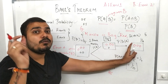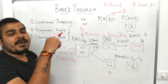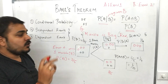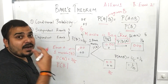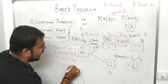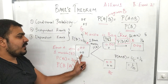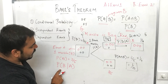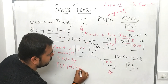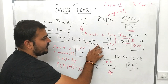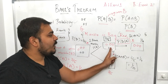In the second event, we want to find the probability of picking one more black marble. We write this as probability of B given A, meaning the B event given that the A event has already taken place. Since one black marble is already removed, there is one black marble left out of four total, so the probability of B given A is one by four.